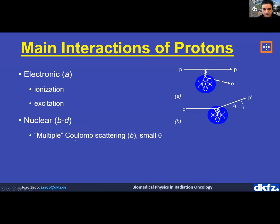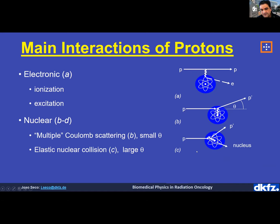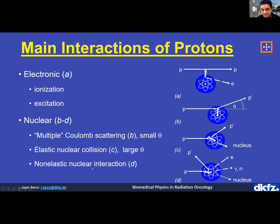Multiple Coulomb scattering involves many elastic interactions, which causes the beam to spread as it goes deeper. There is also elastic nuclear scattering, where a nucleus recoils and a proton is emitted at a large angle. Finally, non-elastic nuclear interactions can produce neutrons, gamma emissions, positron or electron emissions, and a remaining nucleus. These are the main interactions involved with protons.